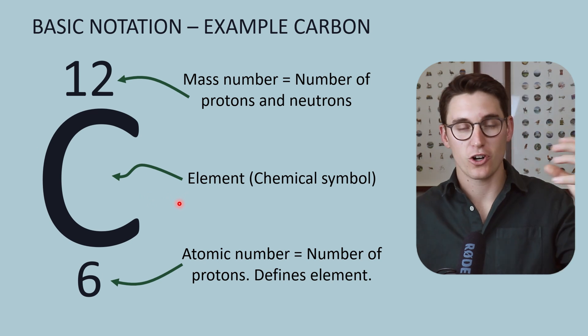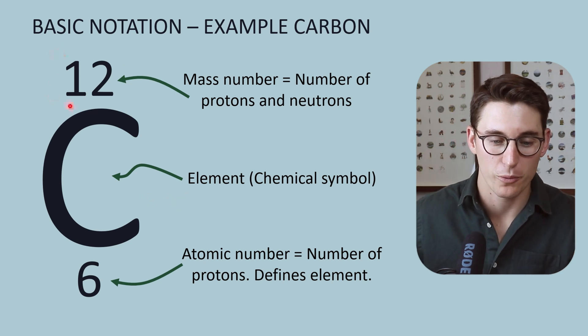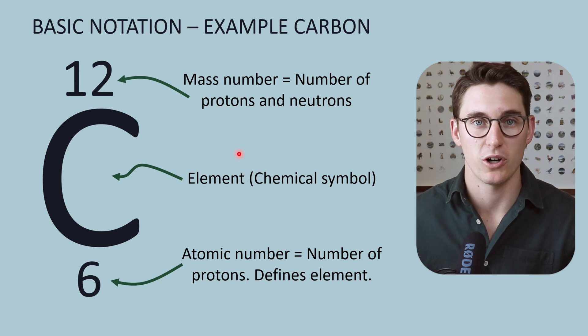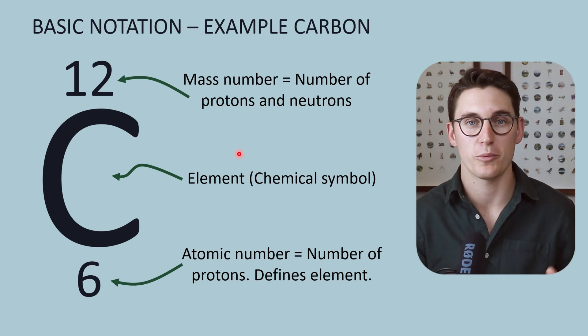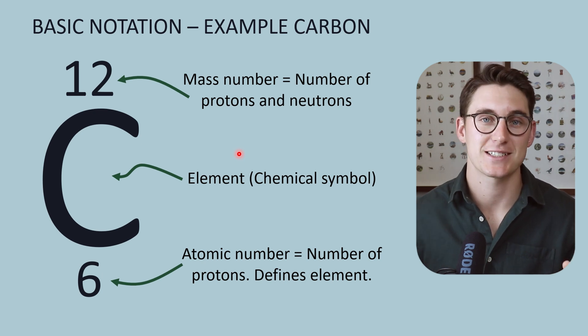The majority of carbon that we find in our atmosphere is known as carbon-12. It's got a mass number of 12—six protons and six neutrons. And in an uncharged carbon atom, there would be six electrons.